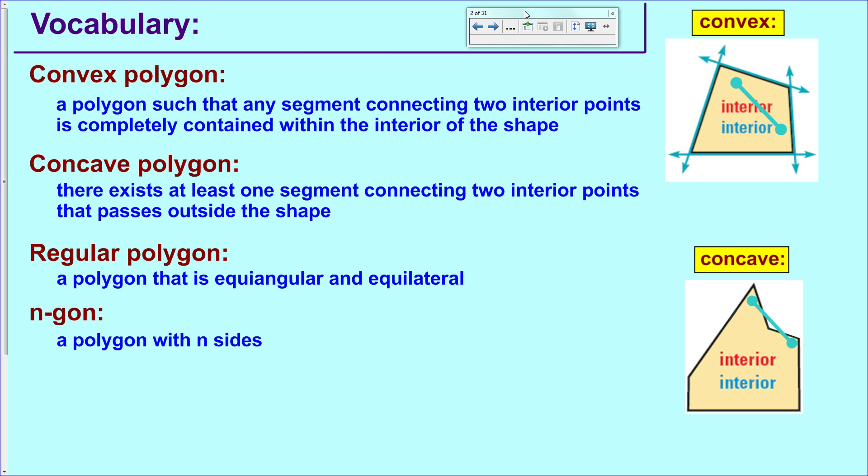And then, remember your definition for regular polygon, which is equiangular and equilateral. Also, remember that we can refer to any polygon by the number of its sides, so if you wanted to name a polygon with 20 sides, you could call it a 20-gon. If you wanted to call a triangle a 3-gon, you may.